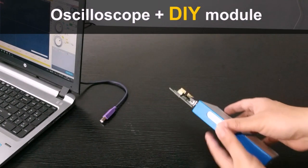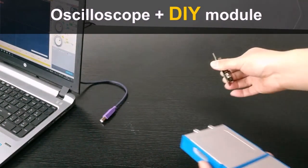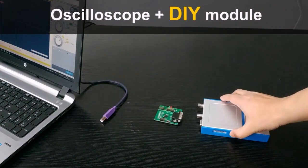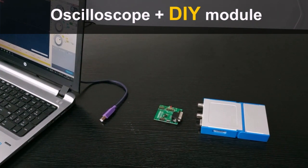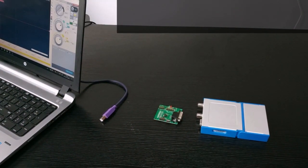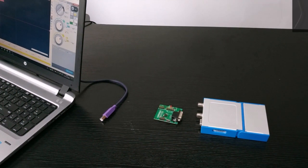In alternative, it is possible also to purchase third-party modules. These modules are not expensive and allow the user to have new functionalities together with the oscilloscope.